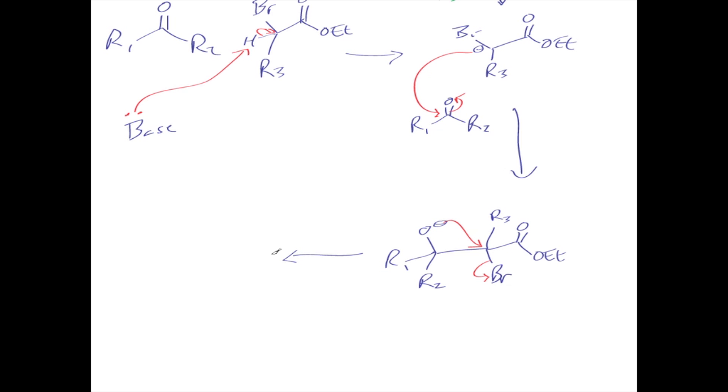To give the epoxide with R3, R2, and R1. And that is the Darzens condensation.